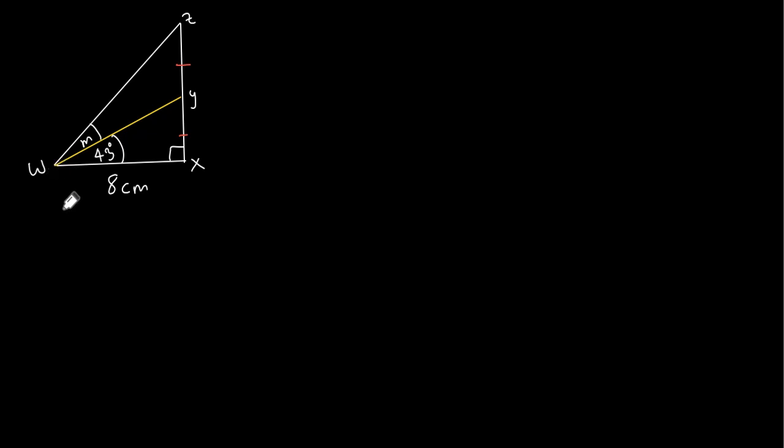Hello everyone, in this video we have been given this nice right angle triangle problem. We have triangle WXZ, and then line WY divides line XZ into two equal parts, so that is what this red line means.